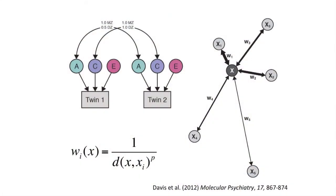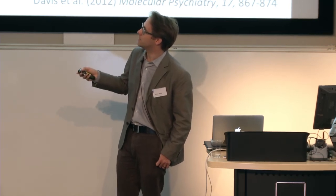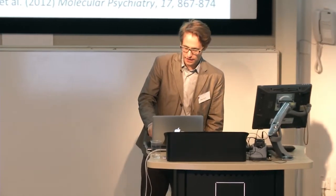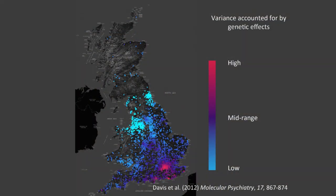My first question was: if we can see these changes over time, can we see the same sort of change over space? Can we see whether the balance of nature and nurture varies depending on where we grow up? To answer that, I modified the standard twin model to incorporate spatial information, weighting the contribution of individual twins by their distance from the point of estimation. If you repeat that for thousands of locations across the UK, you can build up a map of areas where genetic influences are more important and areas where environmental influences are more important.